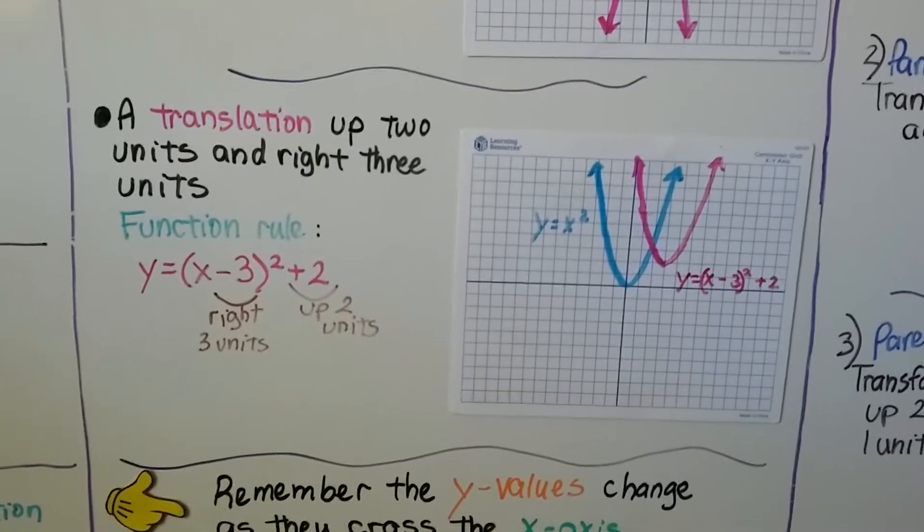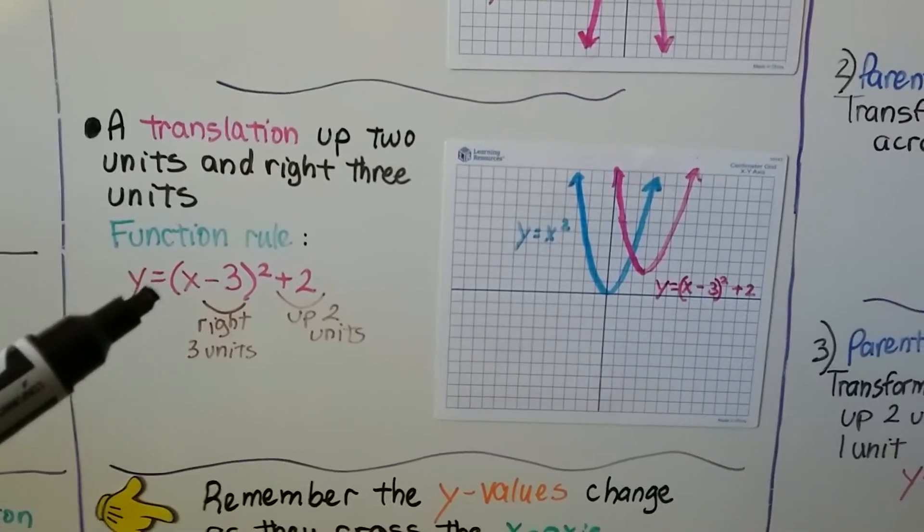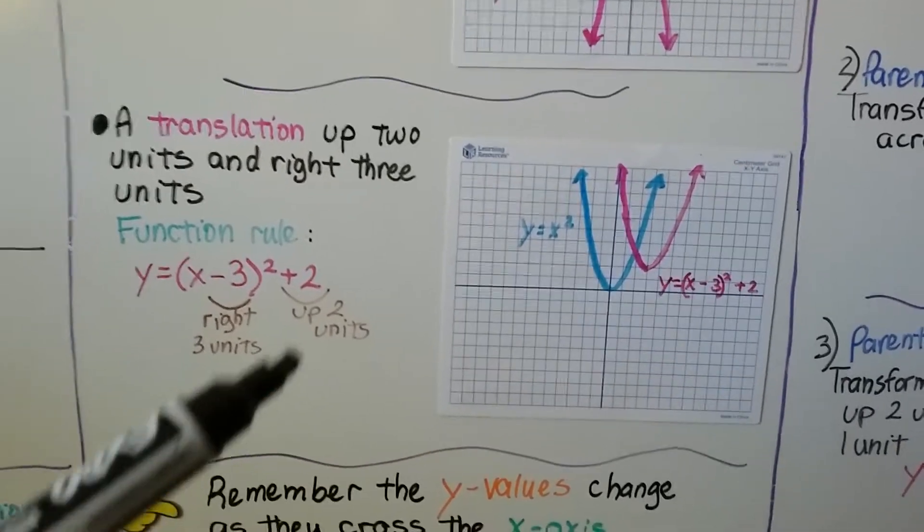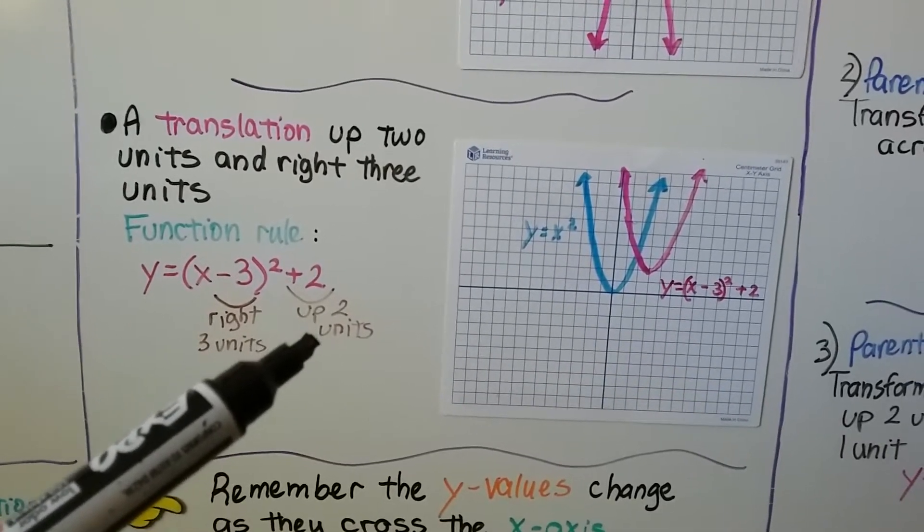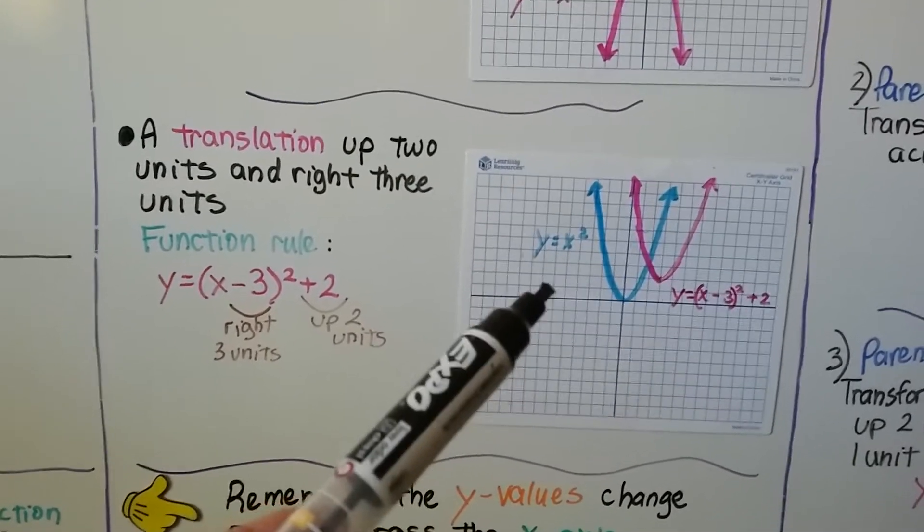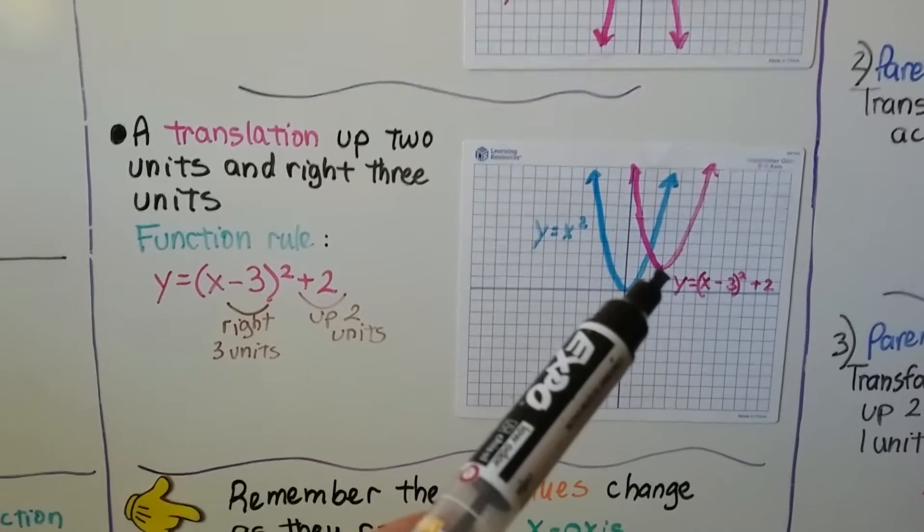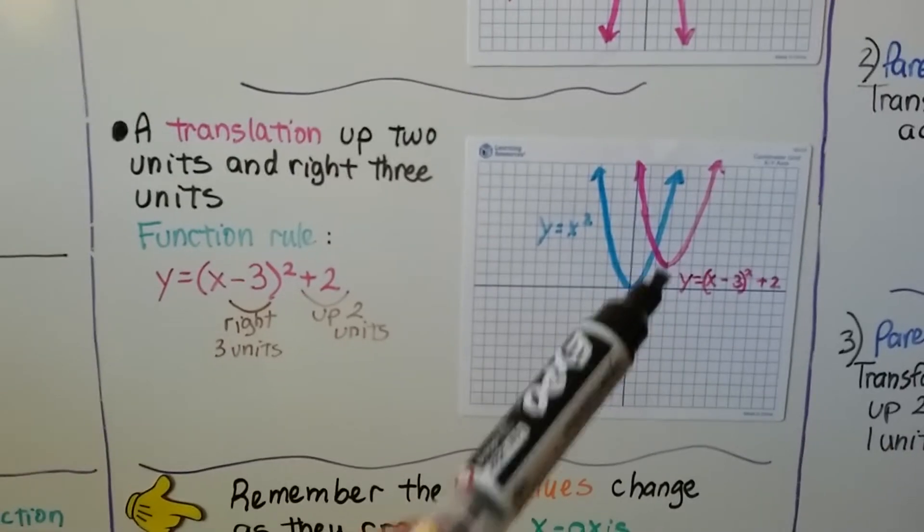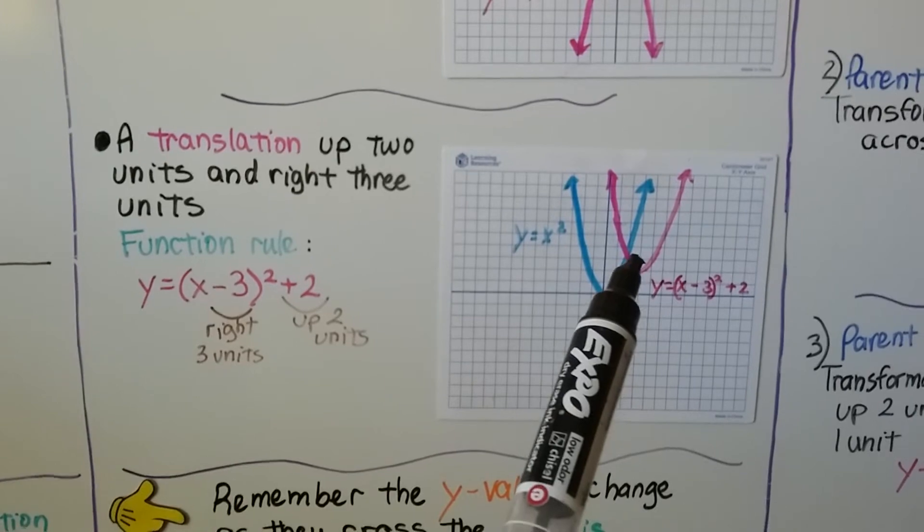A translation up two units and right three units, our function rule would be y equals x minus three squared plus two. Here's our right three units, here's our up two units. Here's our parent function, y equals x squared, and here's our y equals x minus three squared plus two. You can see it moved over three and went up two.